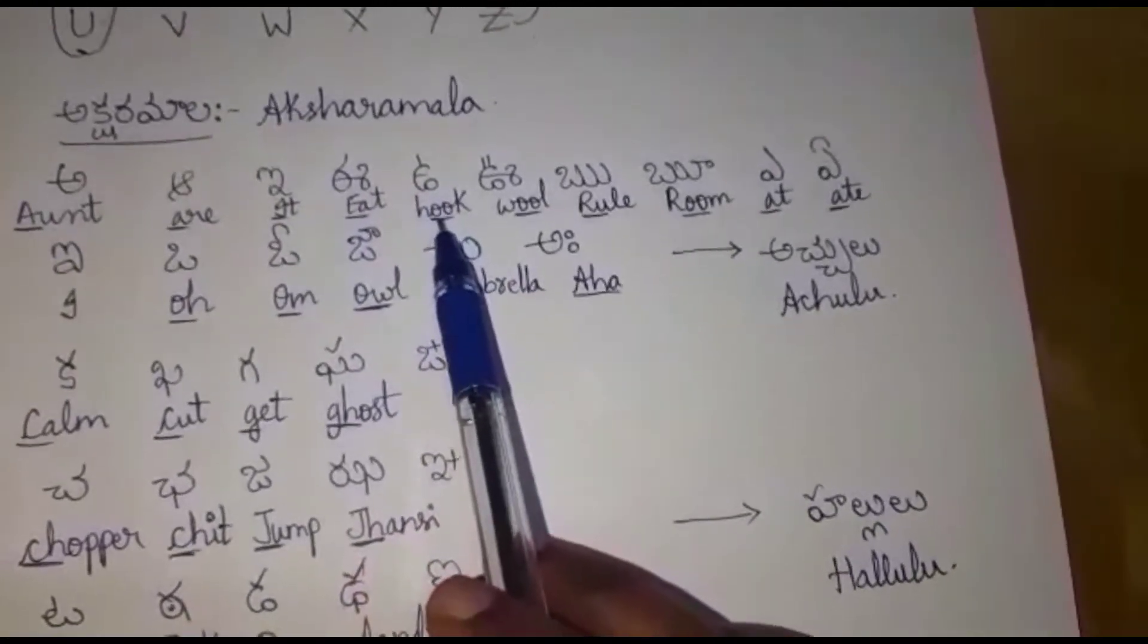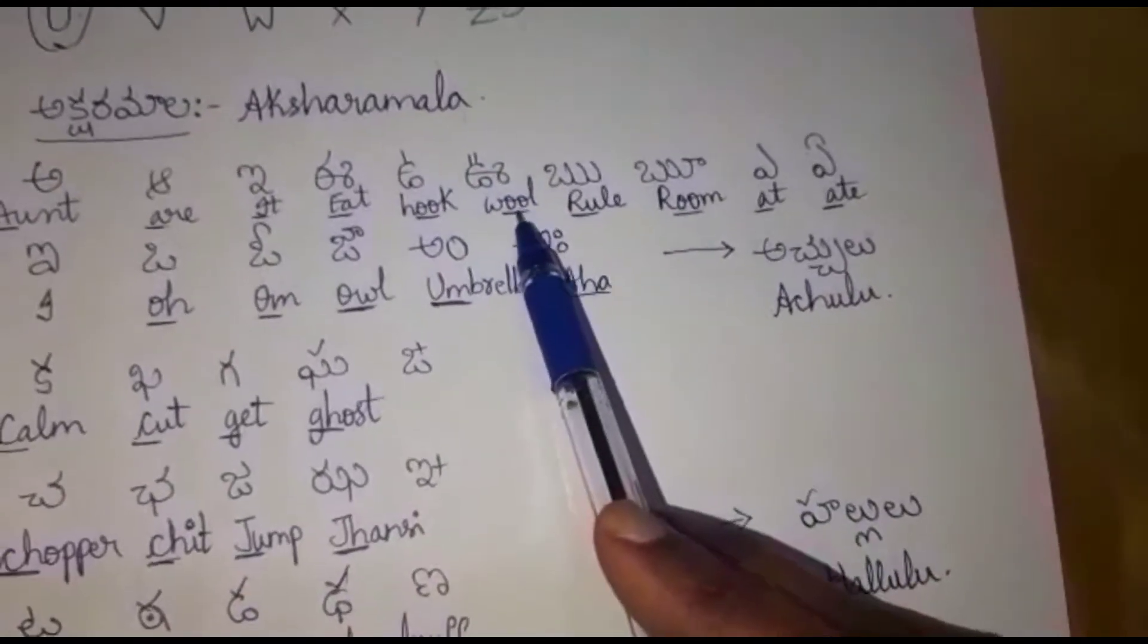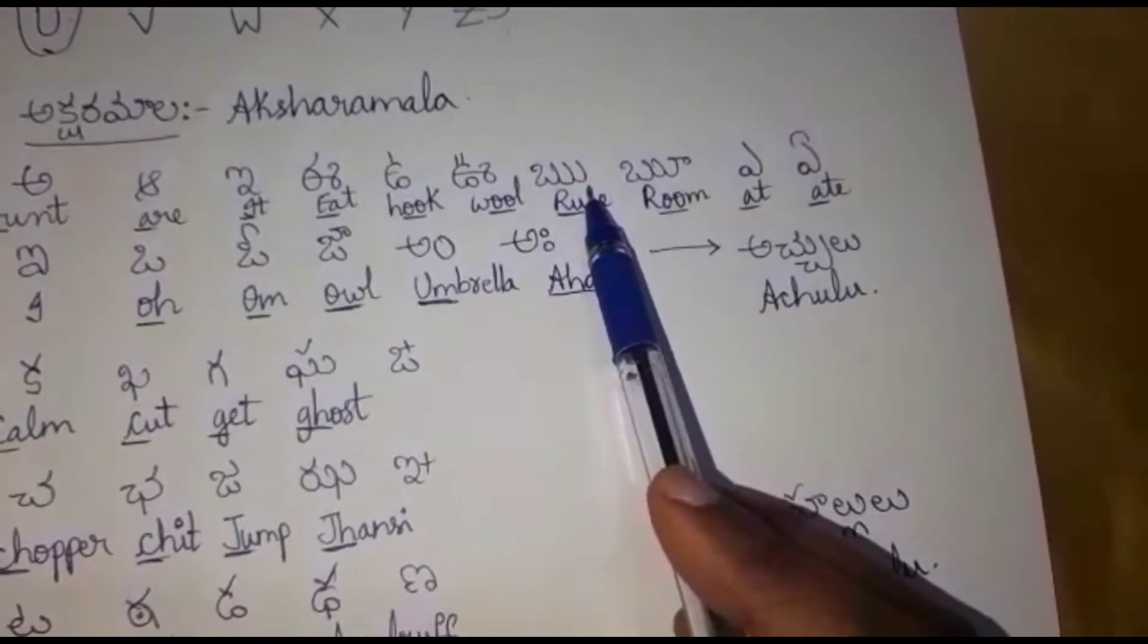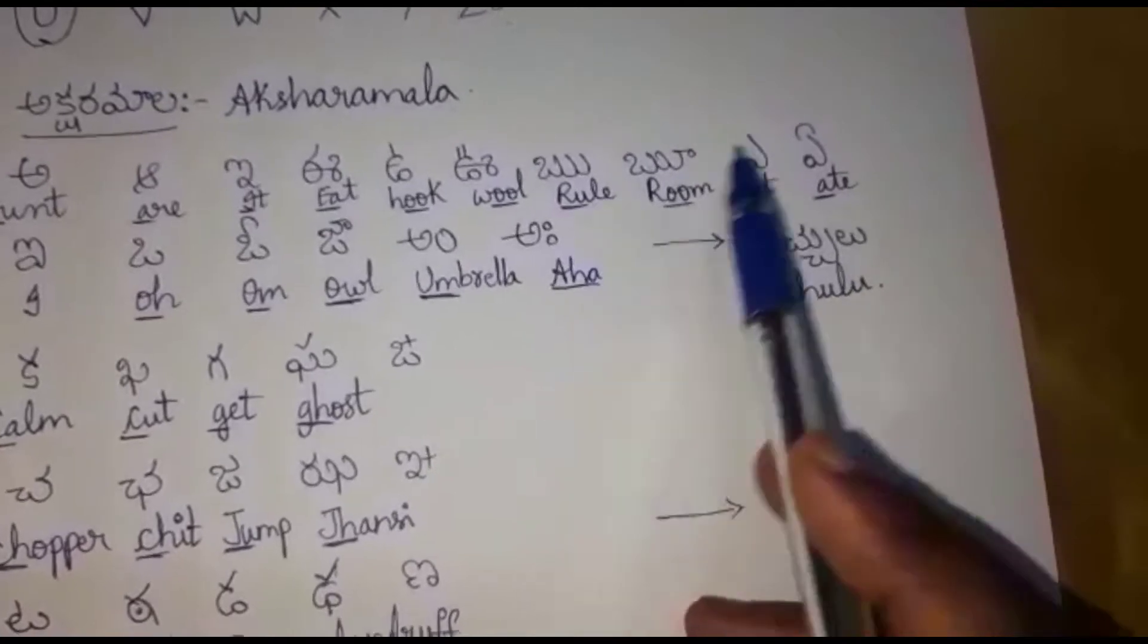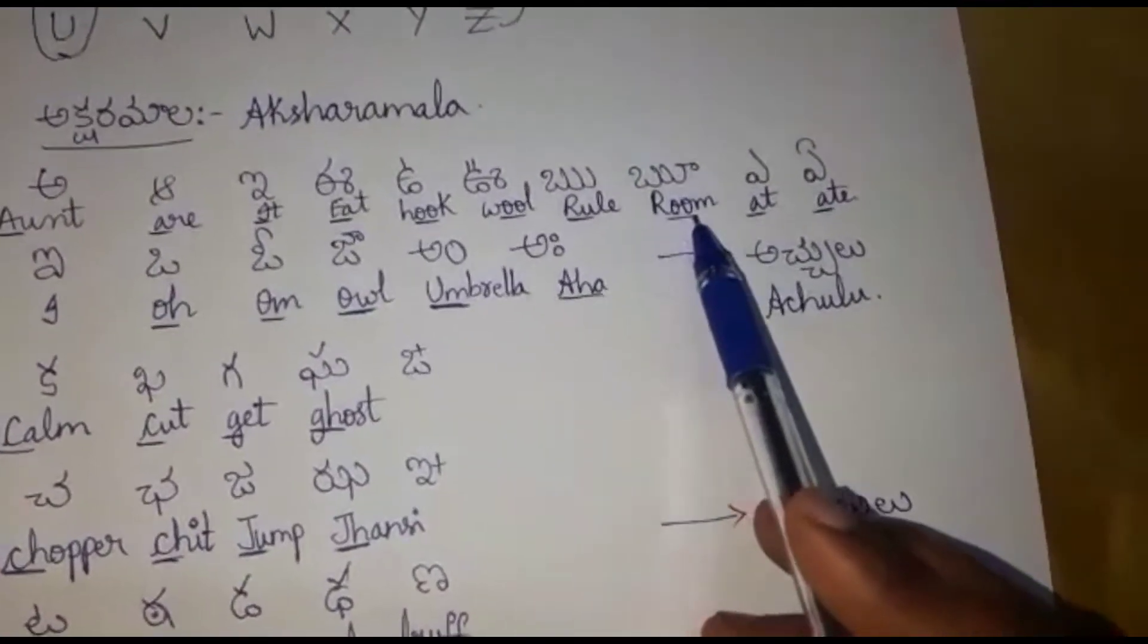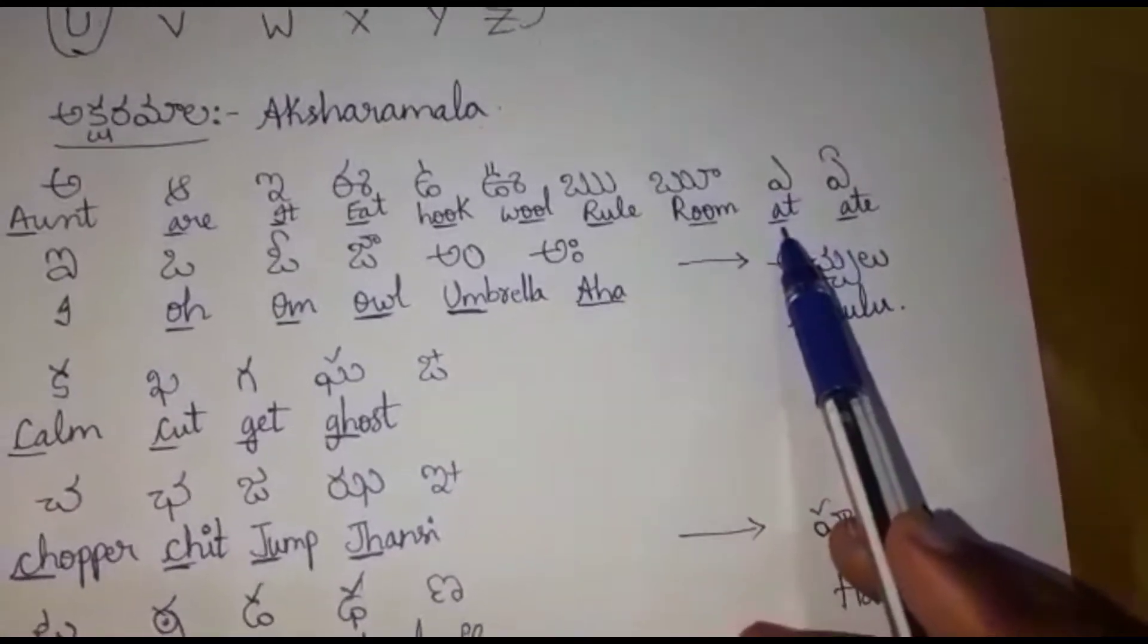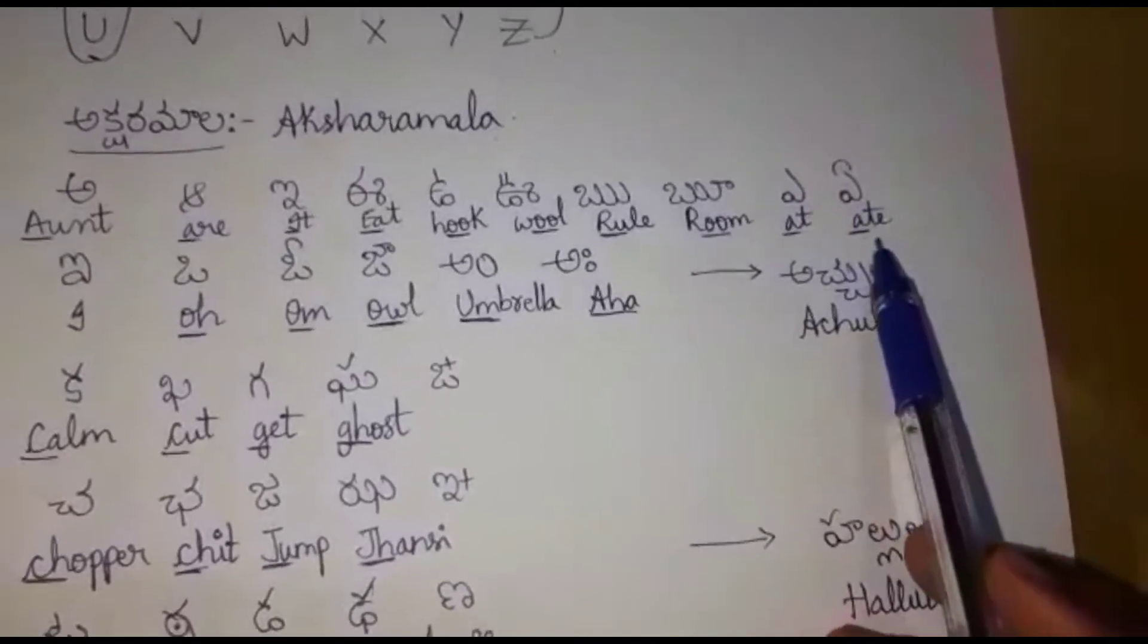O, Hook. Oo, Wool. Ru, Roo, Room. A, At. Aa, It.